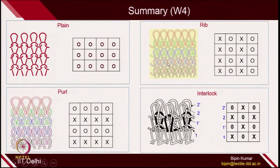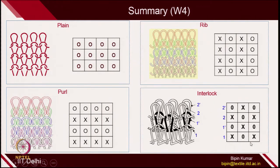Plain fabric has all technical front loops. Rib fabrics have technical front and back loops alternatively in the same course. Purl fabric requires different machines where you have to transfer the entire loops from one bed to another. Interlock fabrics have two sets of needles — long butt needles and short butt needles in the same bed — and you are actually creating two ribbed designs in the same course, feeding two yarns. In the first feed, long butt needles make technical front, and the long butt needles of the back bed make technical back. In the second feed, they do the opposite, so two ribs are actually intermeshed.